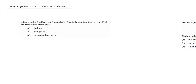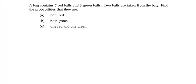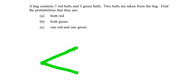Let's do the first question. A bag contains seven red balls and three green balls; two balls are taken from the bag. Find the probability that they're both red. We start off in exactly the same way as before with the branches of our tree diagram, with red and green.